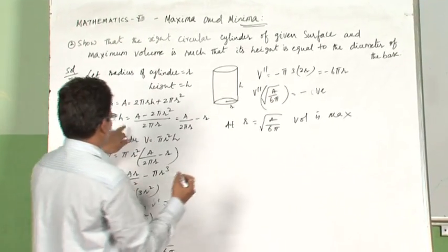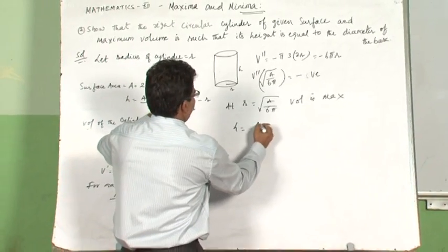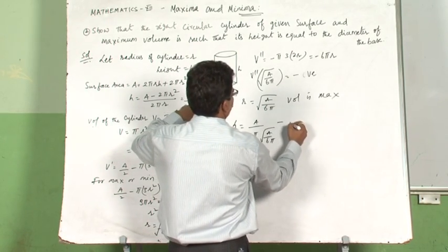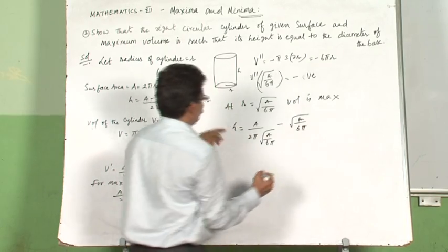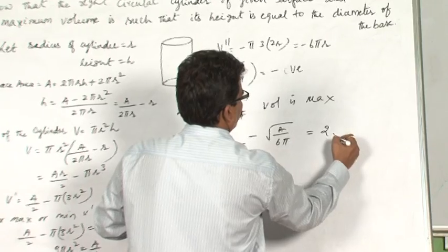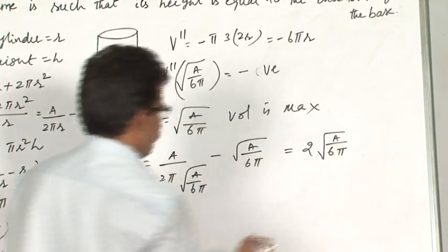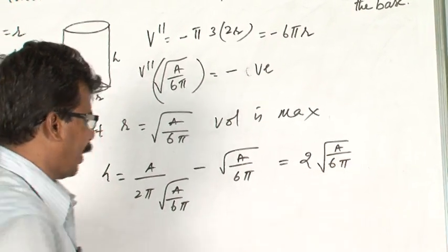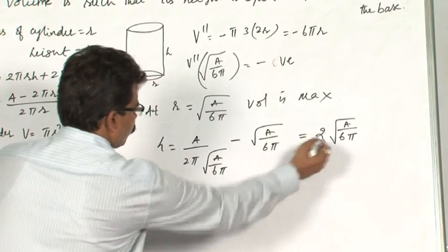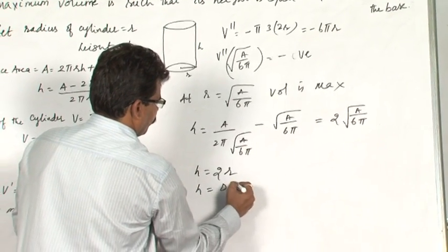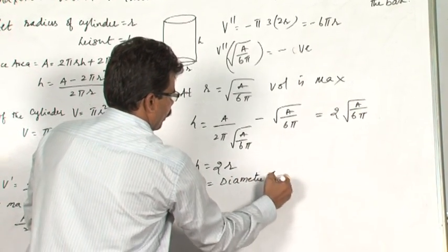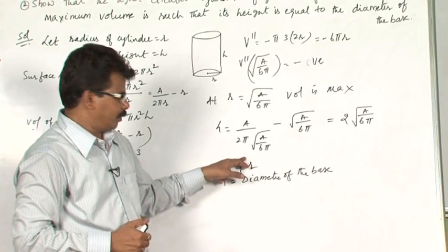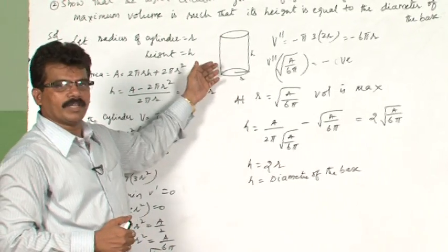At r = √(A/(6π)), let us find the height h. Substituting into h = A/(2πr) − r with r = √(A/(6π)), simplifying gives h = 2√(A/(6π)), which equals 2r. That means h = 2r, i.e., height equals the diameter of the base. So when the volume of the cylinder is maximum, h = 2r.